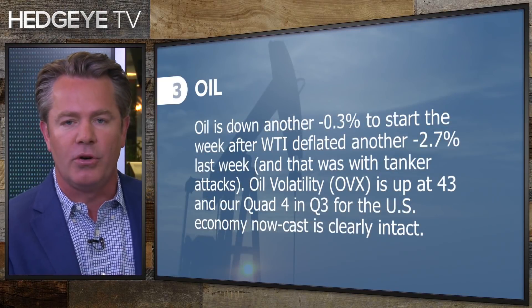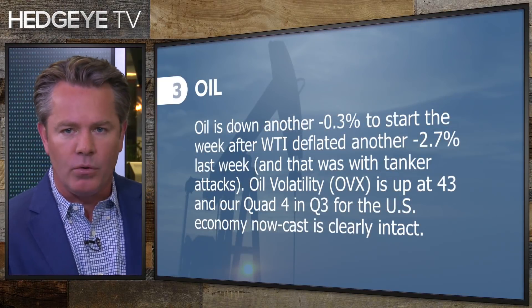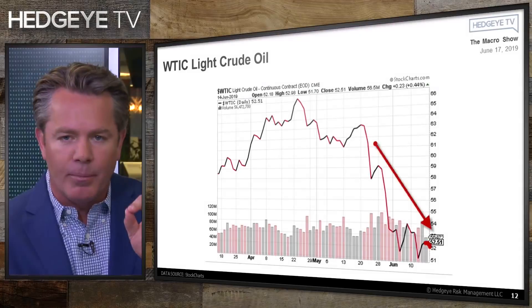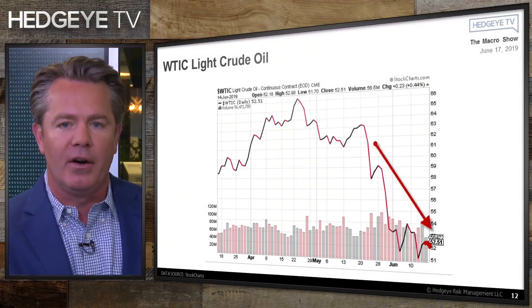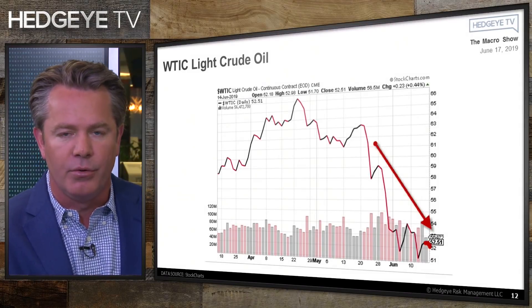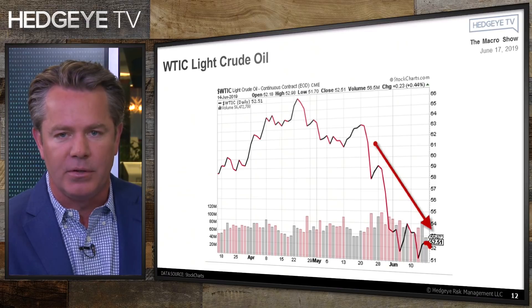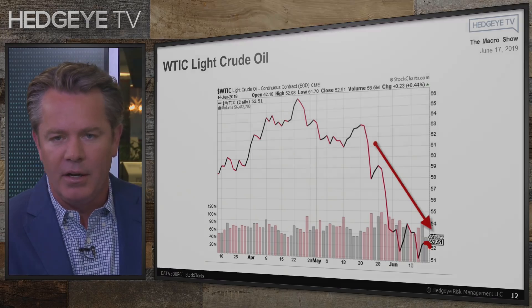We went from bullish to bearish on oil in May. Why? Quad four. The number one thing in our nowcast for quad four in Q3 is oil's recent collapse and the commodity complex continuing to be in a bearish trend.